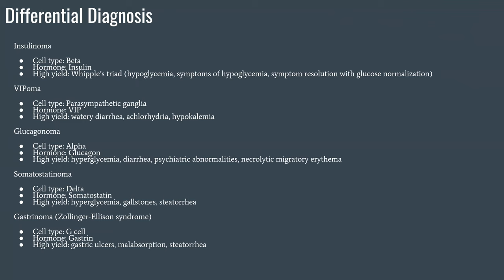The triad includes hypoglycemia — the opposite of what we had in our example — symptoms of hypoglycemia such as hunger, fatigue, dizziness, lightheadedness, and mental status disturbances, and then symptom resolution with glucose normalization. If you have a patient or practice question with hypoglycemia, when you give them glucose, you rapidly improve the mental disturbances and all the other symptoms.